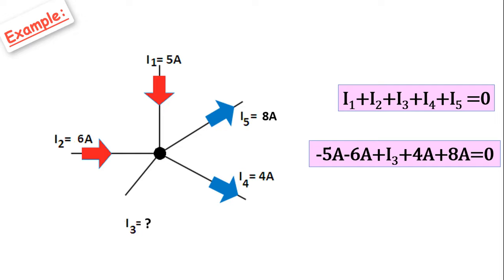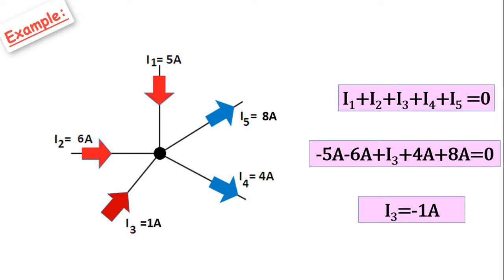It will be: negative 5 amps minus 6 amps plus I3 plus 4 amps plus 8 amps equals 0. From here, we find I3 equals negative 1 amp. What does the negative sign mean? It means that the current I3 is also coming into the node, with a value of 1 amp. If the result had been positive, the current would be going out through the node. Now we can easily see that the incoming currents equal the sum of the outgoing currents.